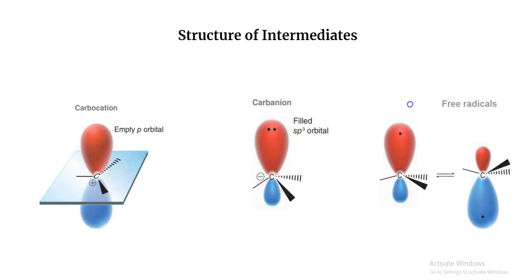Now I want you to understand a little bit about the structure — the orbital and bond structure — of carbocations, carbanions, and free radicals. If you look at the structure of a carbocation, it has a carbon connected to three groups with a positive charge. Whenever an atom is connected to three electron groups, it has a trigonal planar structure. So carbocations always have a trigonal planar structure, and the empty p orbital, which can accept an electron, is perpendicular to the plane of the bonds.